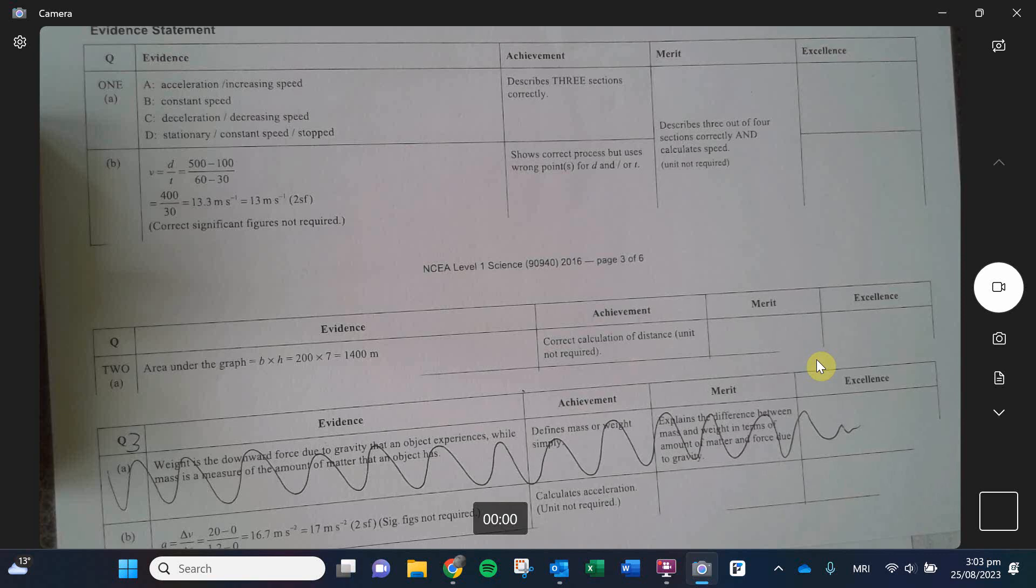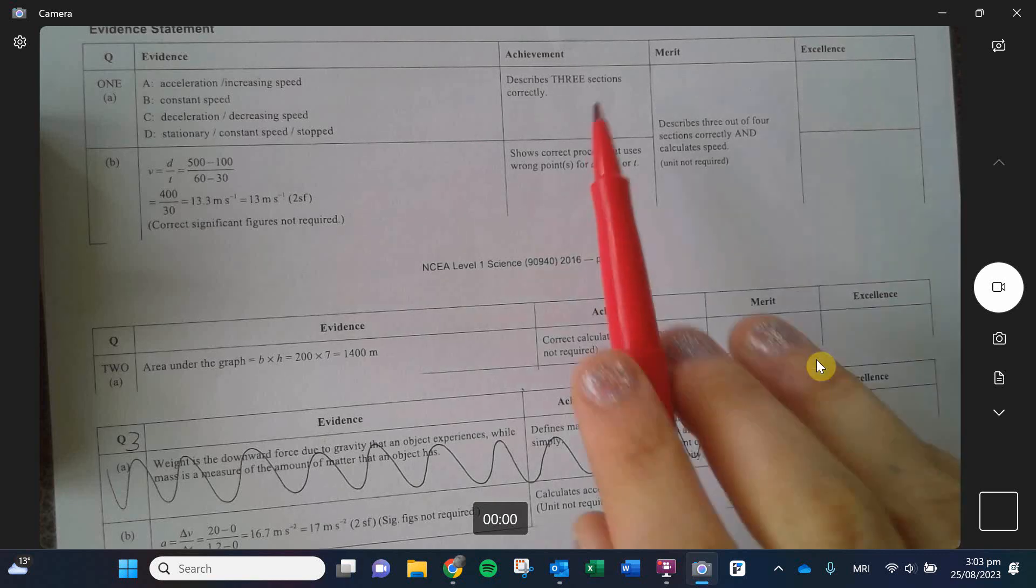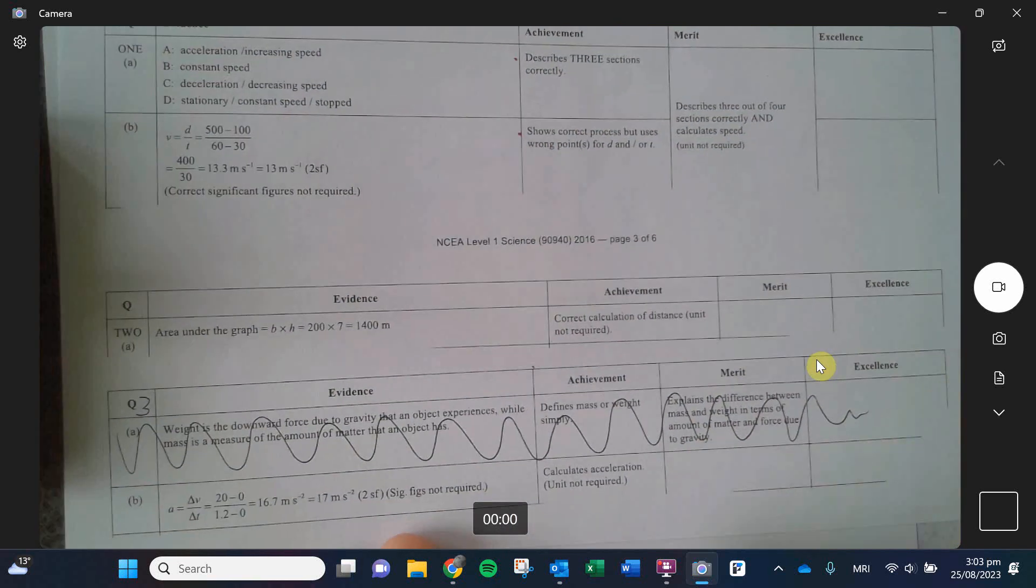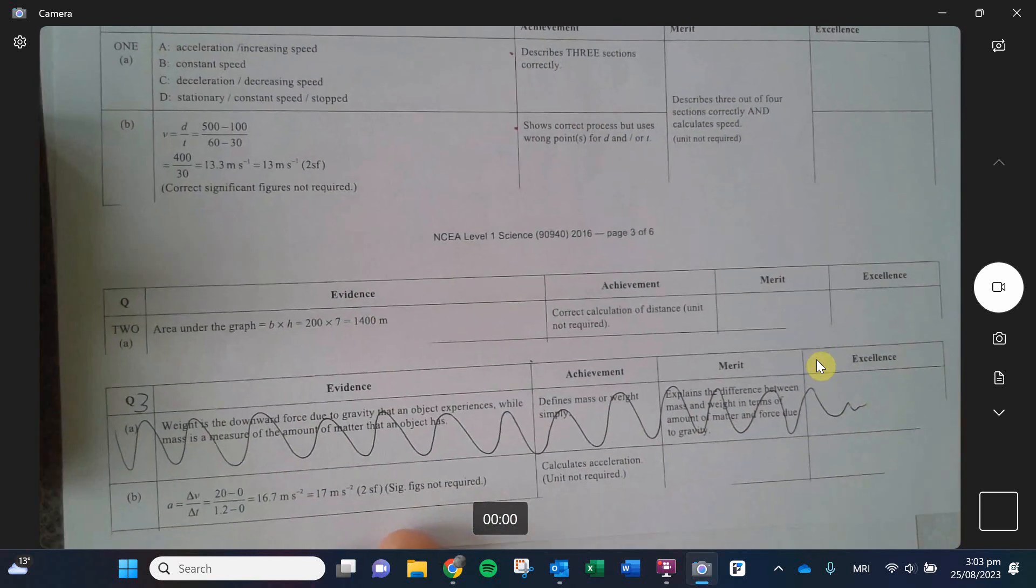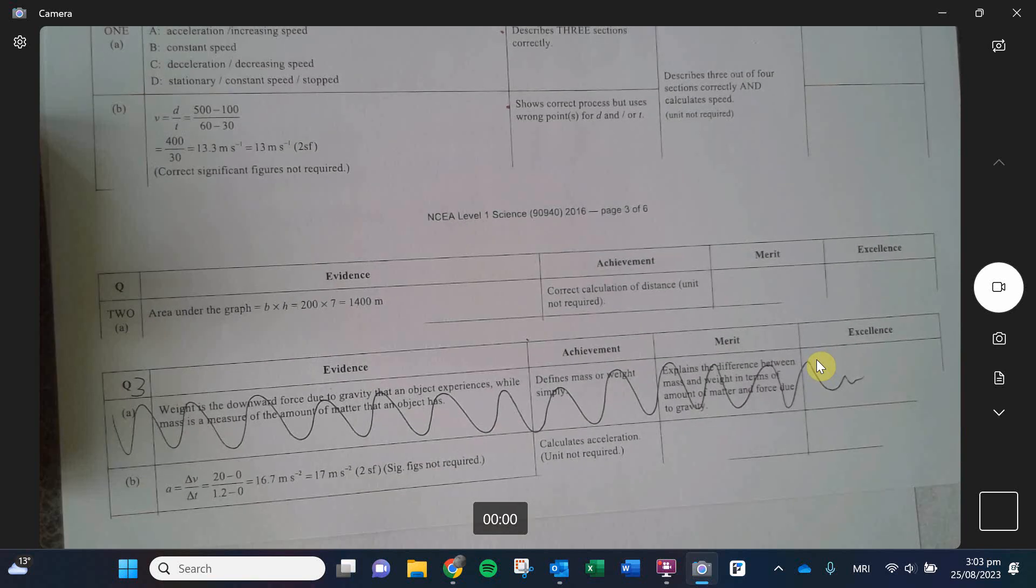And we have things breaking down and achieved merit and excellence. So things have different point values. Usually at the beginning of questions, they're going to be quite easy. They're going to be worth achieved. And as you go through them, they'll get more difficult and more detailed and they can go up to excellence. The good news is that even if a question is an excellence level answer, you can still earn the lower points. So depending on the quality of your answer will affect what grade you get.